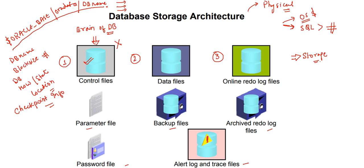Next, data files contain the user or application data of a database. All data triggered from the application side or by a user is stored in data files. We manage data as DBAs, but there must be a physical existence of that data stored in physical data files. There are multiple data files: the SYSTEM data file, SYSAUX data file, USERS data file, TEMP data file, and others. User-related data resides in data files.